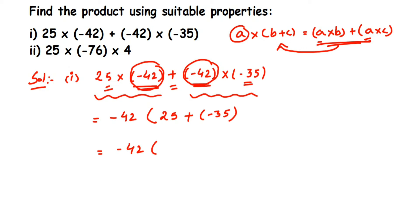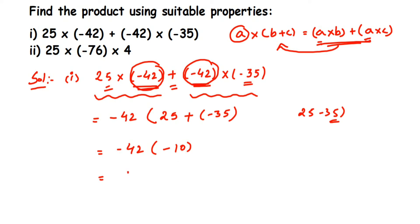So this equals minus 42 multiplied by 25 minus 35. Now 25 minus 35 is minus 10, because 35 is greater so we get a negative result. Then minus 42 multiplied by minus 10: 42 times 10 is 420, and minus times minus is plus, so we get plus 420. That's the answer to the first question, solved using the distributive property.